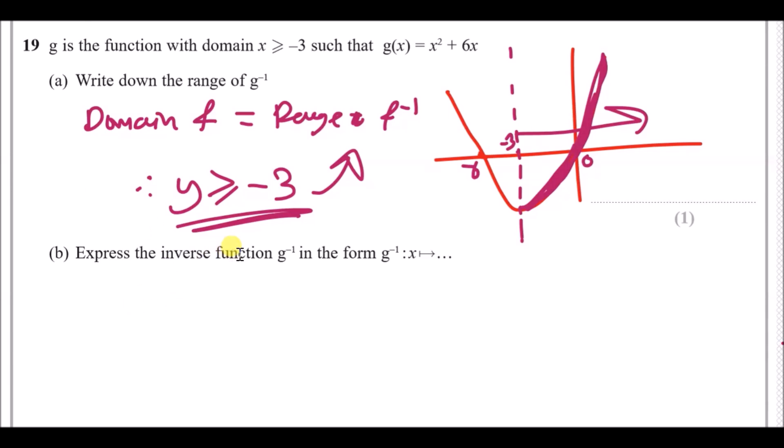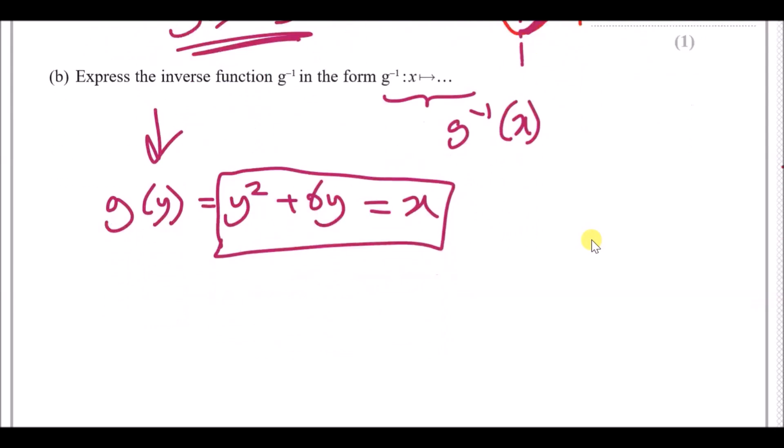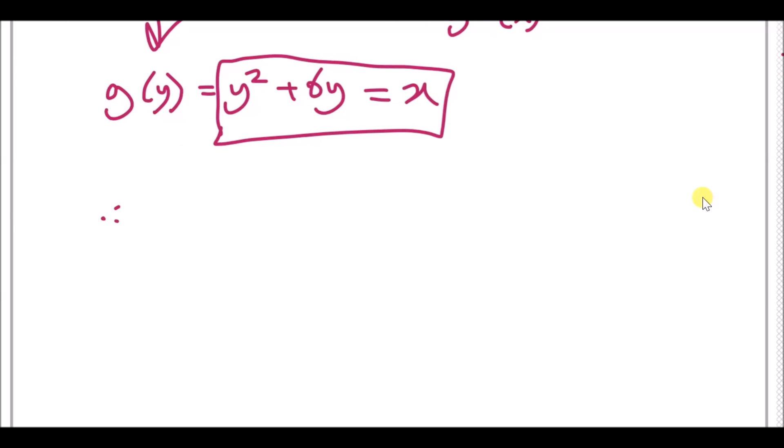Express the inverse function, so g minus one, into the usual form. So this literally means express it into this form. Now to do this one, and this is such an easy way, you look at the g function and just replace all the x's with y. So that's how you do the inverse. So we're going to have g(y) equals y squared plus 6y, and now make it equal to x. So here's our function. It's going to be this.